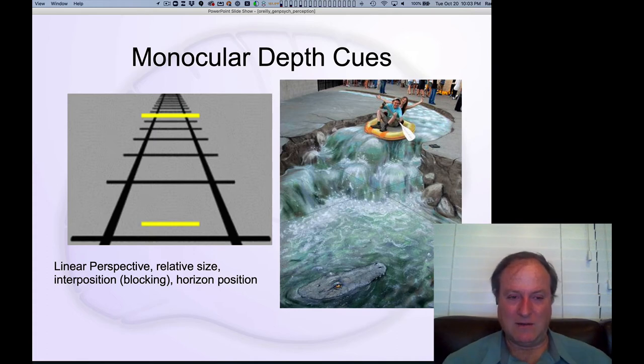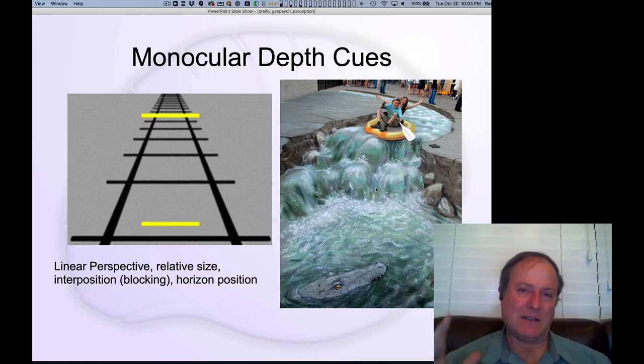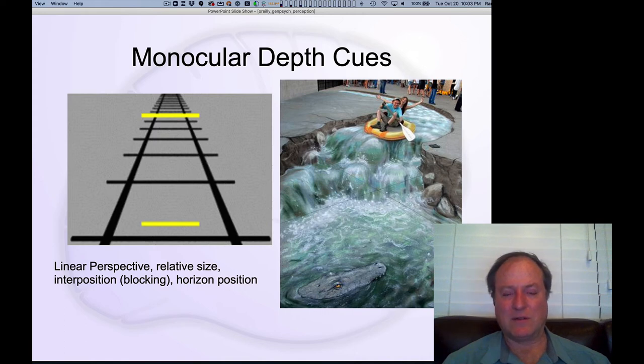And these include this classic linear perspective where you now automatically see that thing as larger than this same exact line length here because of this perspective line receding in the distance. There's also a texture effect taking place here. There's blocking effects, occlusion, all kinds of different cues that tell you what is further away and what's closer up.